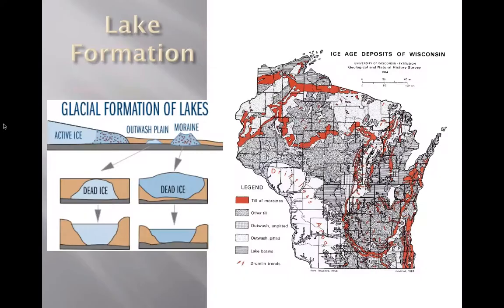Let's start with the physical structure of lakes, and let's go way back and look at how lakes form. In Wisconsin, our landscape is very much dominated by features that are the result of glaciers. The last glaciers receded out of Wisconsin around 10 to 15,000 years ago, but the landscape reflects a very long period of glaciation. Glaciers were not static — there were periods where they retreated and then re-advanced, and each advance and retreat left a different landscape in place.